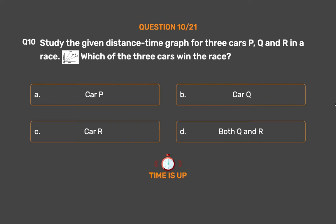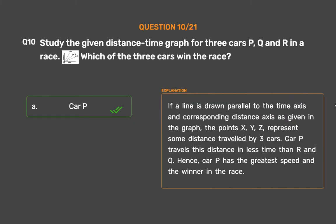The correct answer is Option A: Car P. If a line is drawn parallel to the time axis and corresponding distance axis as given in the graph, the points X, Y, Z represent some distance traveled by the three cars. Car P travels this distance in less time than R and Q. Hence, car P has the greatest speed and is the winner of the race.